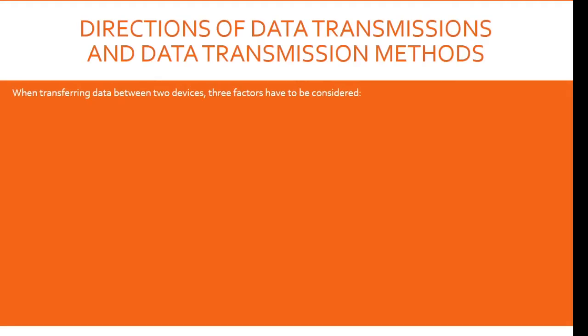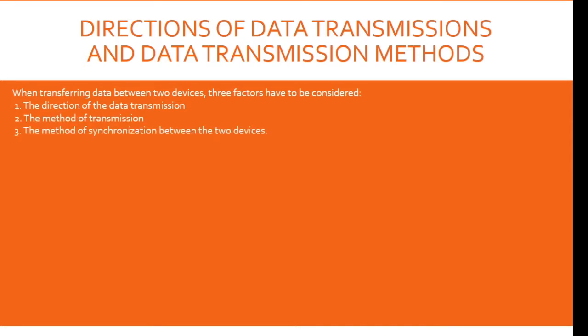Let's start with the methods and directions of data transmission. When transferring data between two devices, three factors have to be considered: number one, the direction of data transmission; number two, the method of transmission; number three, the method of synchronization between the two devices.